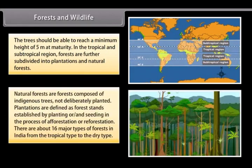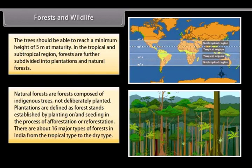Natural forests are forests composed of indigenous trees not deliberately planted. Plantations are defined as forest stands established by planting or seeding in the process of afforestation or reforestation. There are about 16 major types of forests in India, from the tropical type to the dry type.